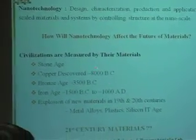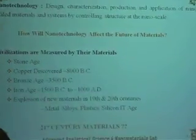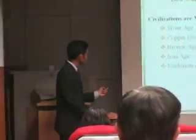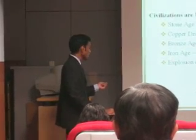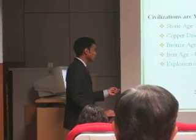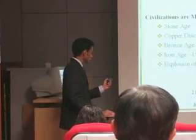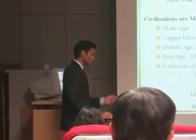How will nanotechnology affect materials? Let us see the simulation, starting from the Stone Age, copper, bronze, iron, and then in the 19th and 20th century come metals, alloys, plastics, and silicon ICs.